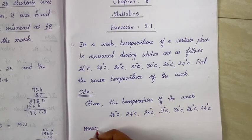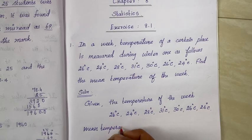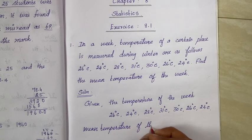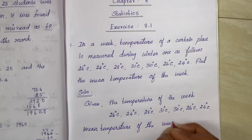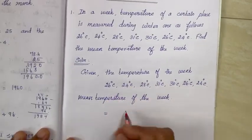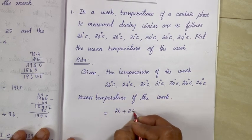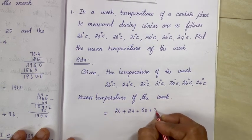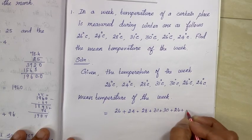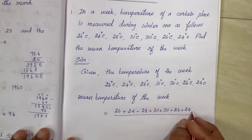Mean temperature of the week equals 26° plus 24° plus 28° plus 31° plus 30° plus 26° plus 24°, divided by 7.